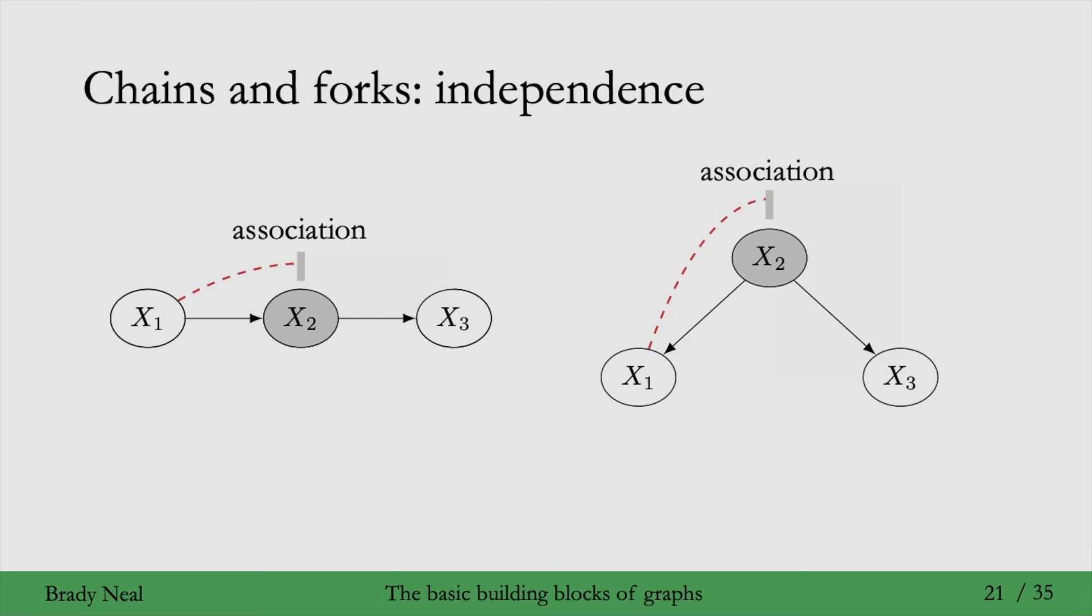And similarly, it's the same in forks. When you condition on x2, it blocks the path from x1 to x3. It makes x1 and x3 conditionally independent.